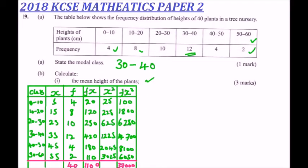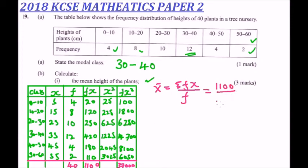We now calculate the mean height of the plants. The formula is: X̄ = ΣFX ÷ ΣF. So that is 1100 divided by 40, which gives us 27.5. That is the mean height of the plant, earning 4 marks.